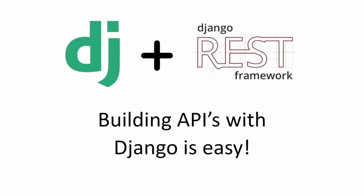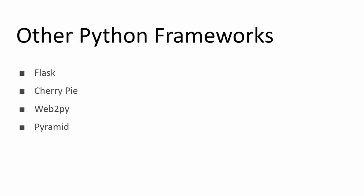If you want to build APIs — for a mobile app or a front-end framework — Django makes this absolutely easy with the Django REST Framework, which is built on top of Django and helps you build REST APIs quickly. We'll get into this towards the end of the series. Other Python frameworks worth mentioning include Flask, which is more lightweight, and Cherry Pie, Web2Py, and Pyramid, though the real competition is between Django and Flask.